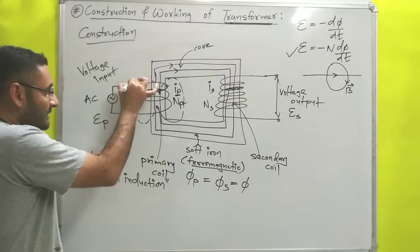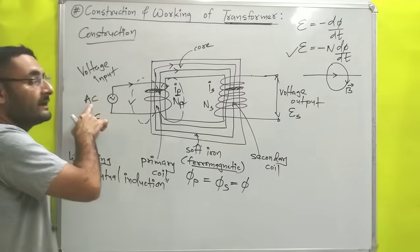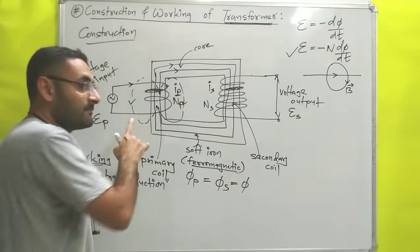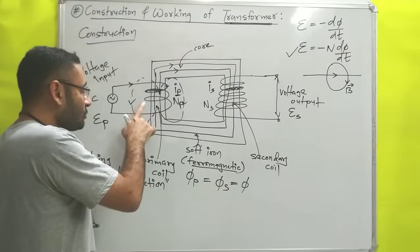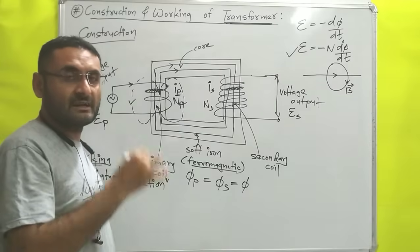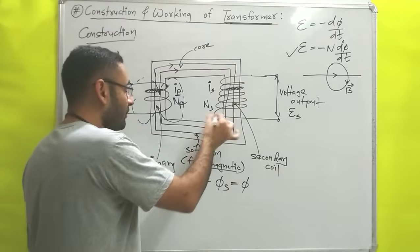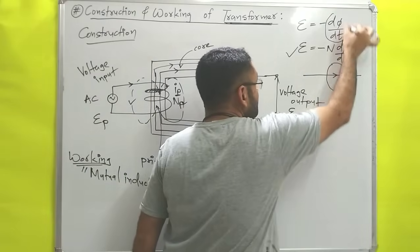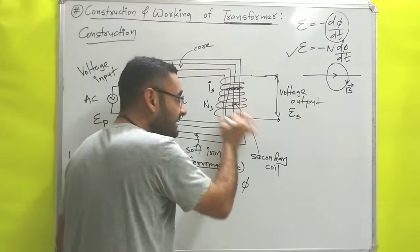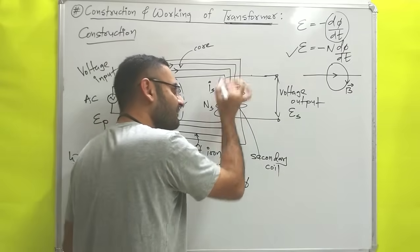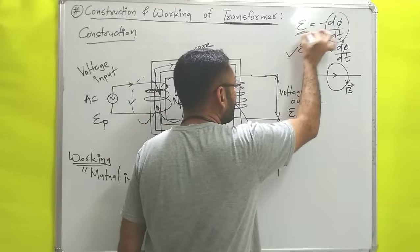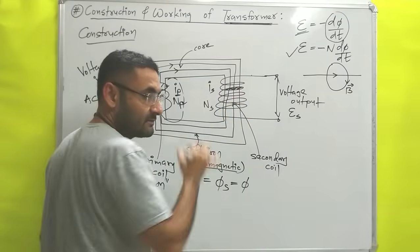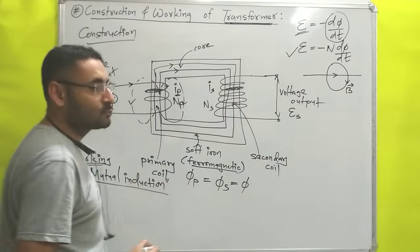Whatever current we supply to the primary coil is alternating current, which is changing its direction and magnitude — it is a variable current. Due to that variable current, the magnetic field lines produced will also vary and change. Whatever flux is linked with the secondary coil will also change. Due to this change in magnetic flux linked with the secondary coil, according to Faraday's second law, EMF is induced. This process is known as mutual induction.